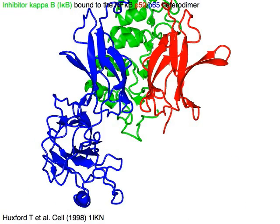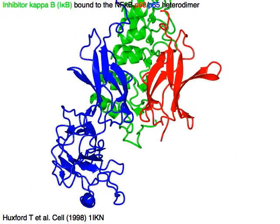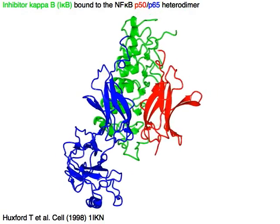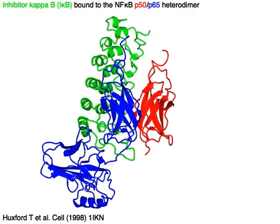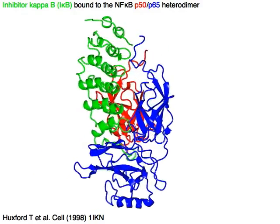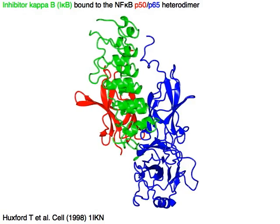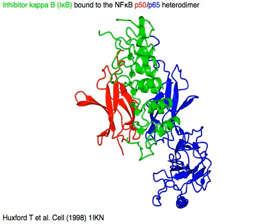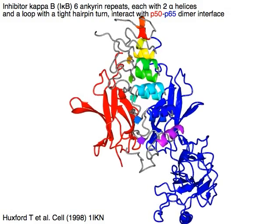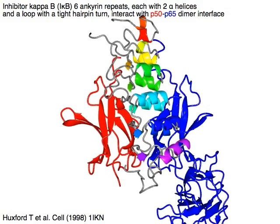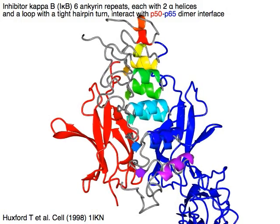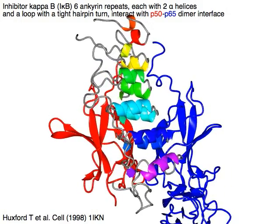Inhibitor Kappa B or I-Kappa B in green binds to the NF-Kappa B red P50 blue P65 heterodimer. I-Kappa B has six anchorin repeats, each with two alpha helices and a loop with a tight hairpin turn. They interact with the P50/P65 dimer interface.